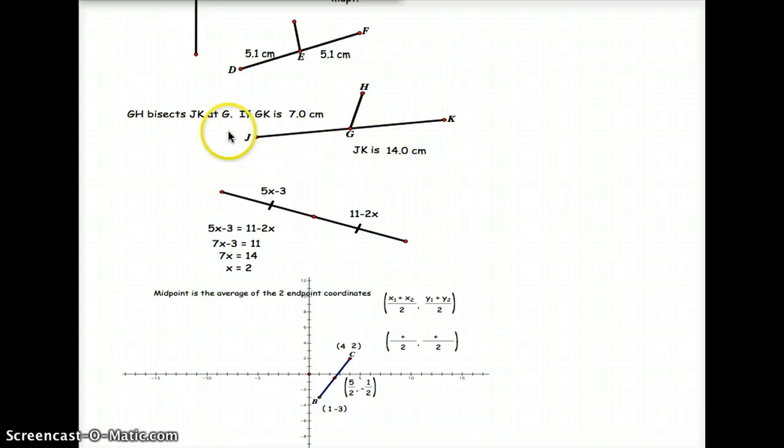Now again, if this is not 7, if GK is not 7, or JG is not 7, then it is no longer a segment bisector because it wouldn't be meeting at the midpoint.